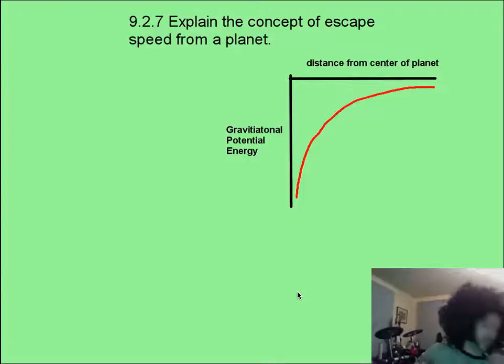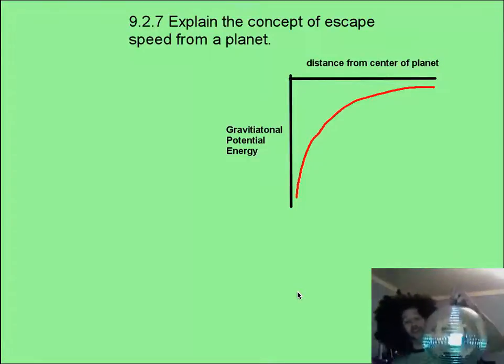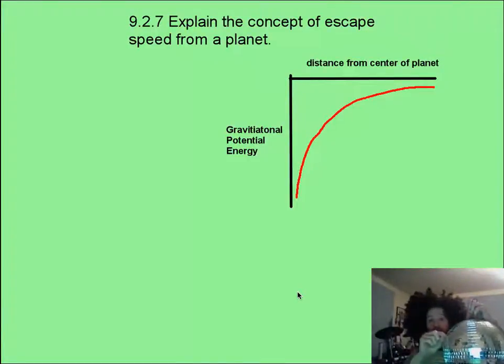So let's say that you've got a planet, which I happen to here, called Planet Disco Ball, and you want to send something so that it never comes back. You're going to need to give it enough energy so that its GPE that you see here becomes all the way zero.